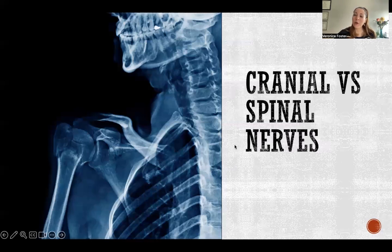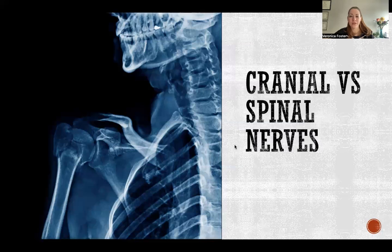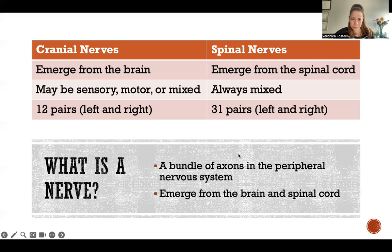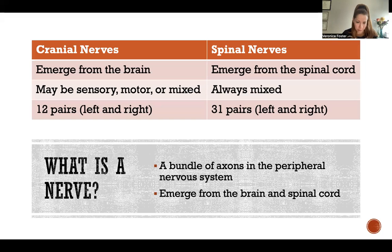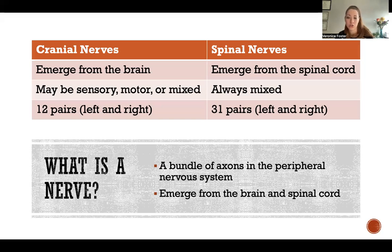Hello. In this video, I'm going to tell you about the difference between cranial nerves and spinal nerves. First off, what is a nerve? It's a bundle of axons in the peripheral nervous system. If it was a bundle of axons in the central nervous system, it would be called a tract.